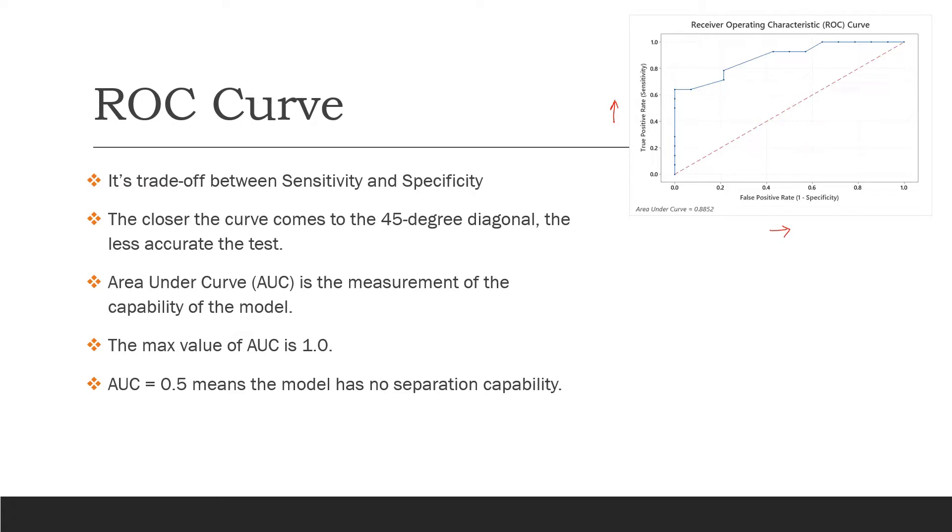Another important thing here is if you look at this 45-degree line, this line basically represents that the model doesn't have any capability to separate. This is a line for a random model. If your model is random and randomly creating values as true and false, then this is the line representing that model.